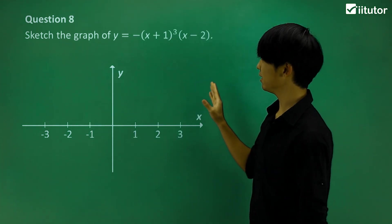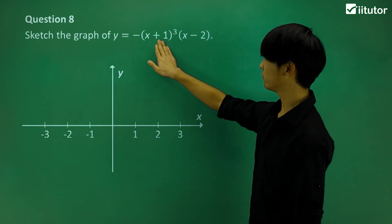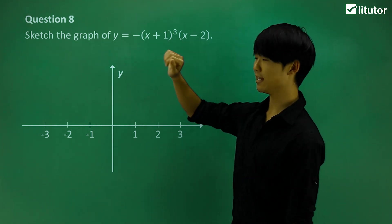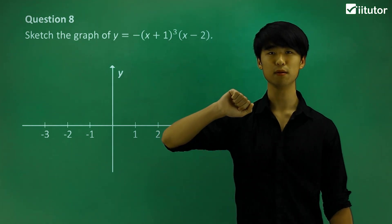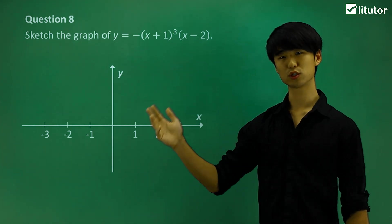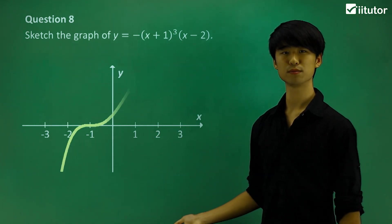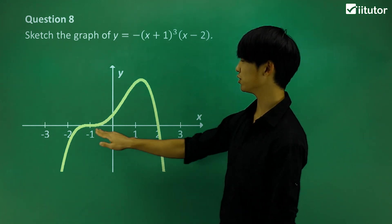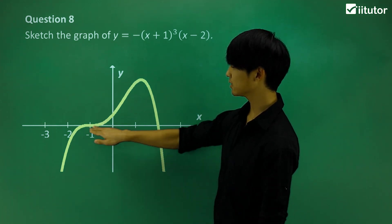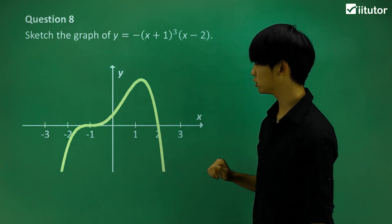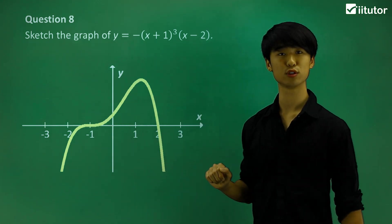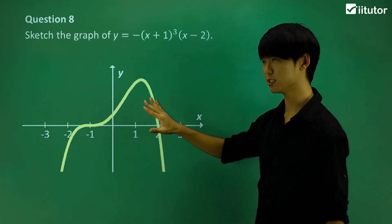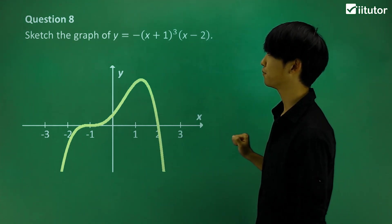Looking at question 8, we again have a triple root and a single root, but it's a negative graph this time. The triple root is at x equals negative 1, and the curve passes through x equals 2. Because it's negative, the graph is flipped. This is how we sketch this quartic.